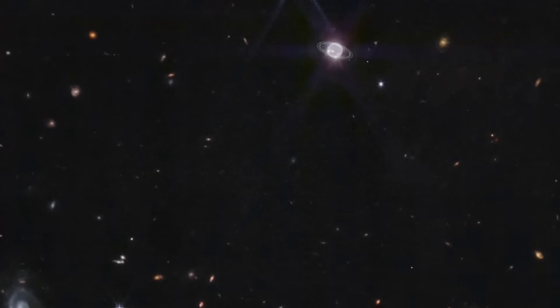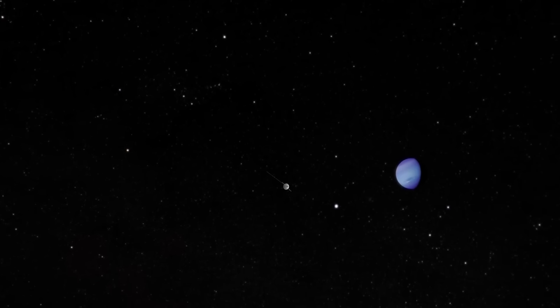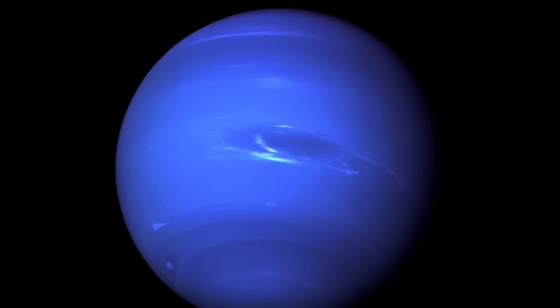Triton orbits Neptune in an unusual backward retrograde orbit, leading astronomers to speculate that this moon was originally a Kuiper belt object that was gravitationally captured by Neptune. Additional Webb studies of both Triton and Neptune are planned in the coming year.